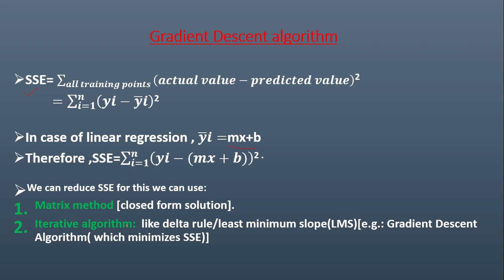Next is an iterative algorithm. The iterative algorithm's example is delta rule or least minimum slope, LMS. And the example is gradient descent algorithm. And this gradient descent algorithm mainly used to minimize this SSE.